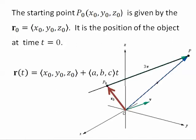The starting point, p-naught, is given by r-naught. It is the position of the object at time t equals zero. So r of zero would give us r-naught.